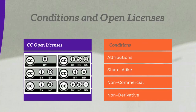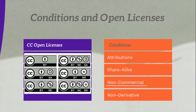The most common way OER materials are released is under a creative commons license. There are six standard creative commons licenses which are combinations of four conditions. These conditions are: attribution, share alike, non-commercial, and non-derivative. Based on these four conditions, we have six creative commons open licenses.